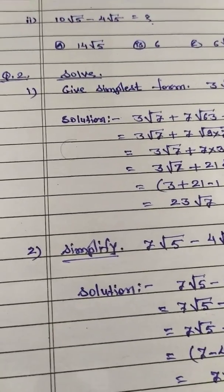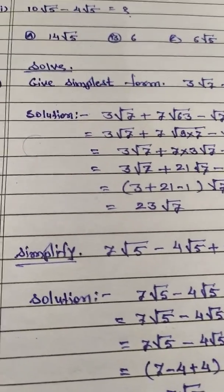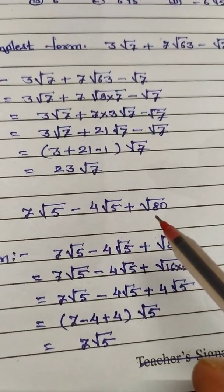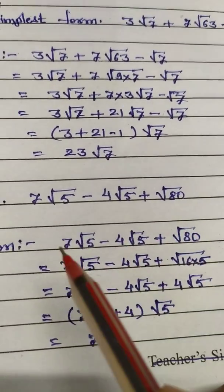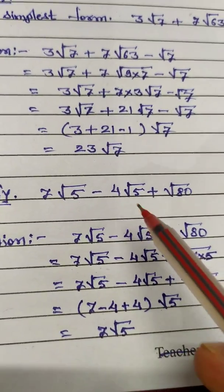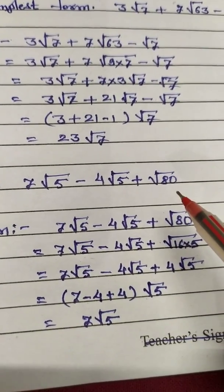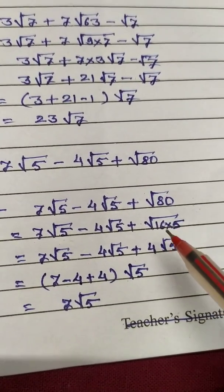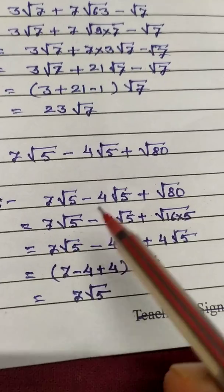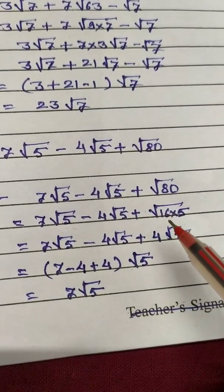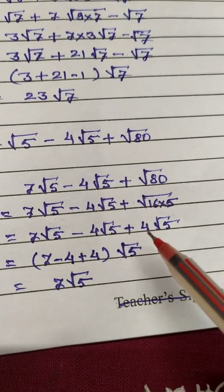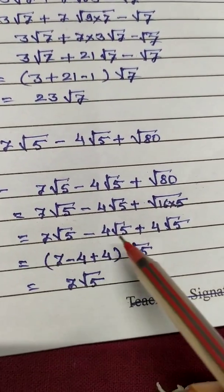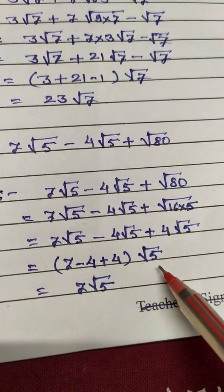Now second example is, we will simplify 7 root 5 minus 4 root 5 plus root 80. In this case also, this is a like surd, but we have to convert this 80 into this root 5. So 80 means 16 times 5. Again I write this as it is, and 16 means root 16 means 4, so remaining root 5 as it is. Now all these surds are like surds, so I take root 5 common and take this in bracket.